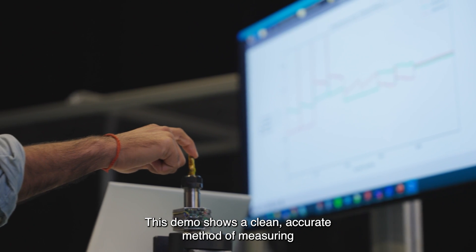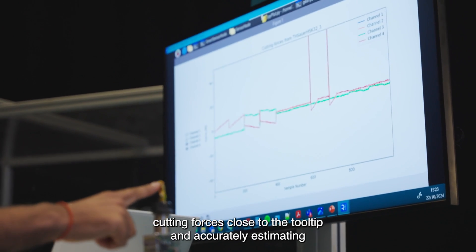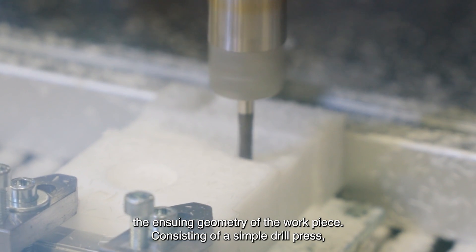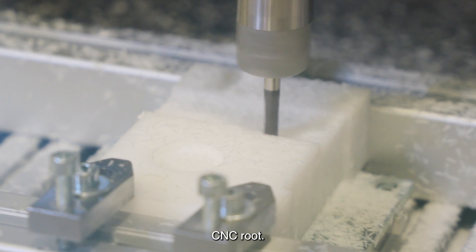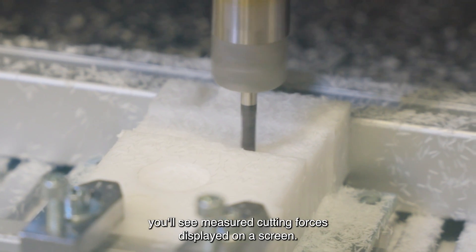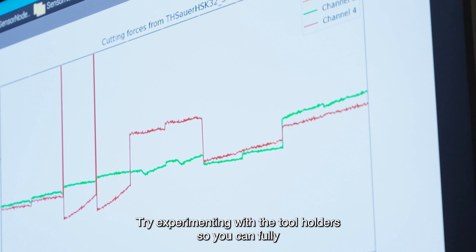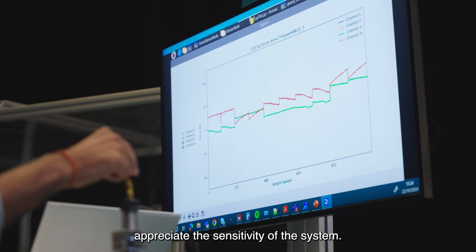This demo shows a clean, accurate method of measuring cutting forces close to the tool tip and accurately estimating the ensuing geometry of the workpiece. Consisting of a simple drill press CNC route, you'll see measured cutting forces displayed on a screen. Try experimenting with the tool holders so you can fully appreciate the sensitivity of the system.